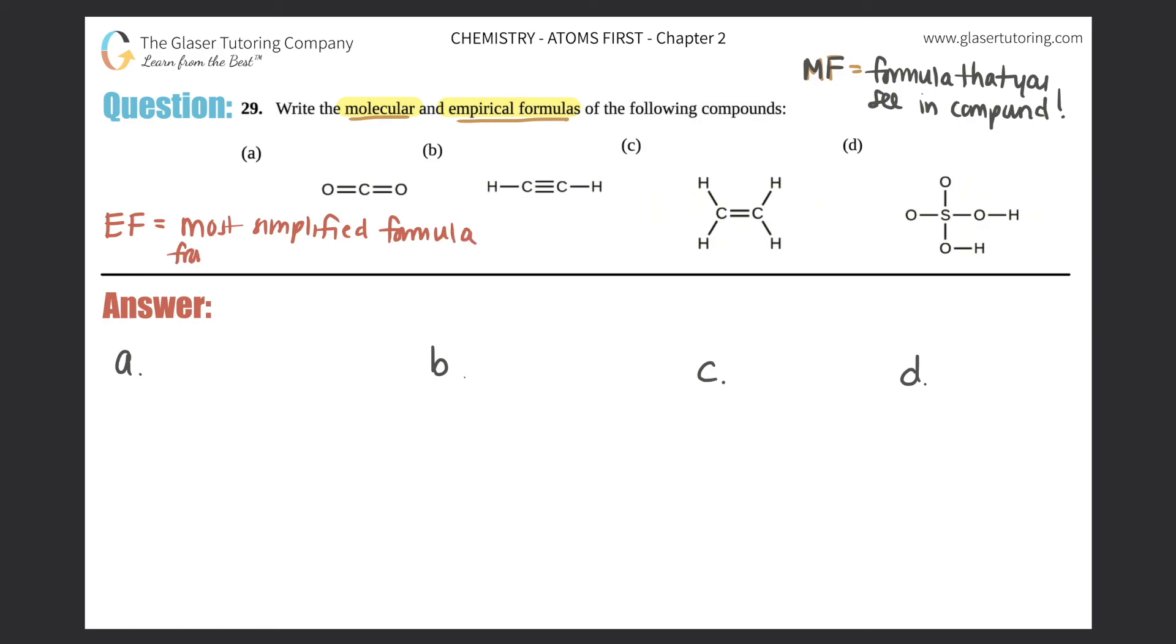However, the empirical formula, which I will put over here as EF, the empirical formula is always the most simplified formula from compound. So this one is when you're going to look at your molecular formula and say to yourself, can I simplify it? And you can only simplify subscripts. So we should know what subscripts are. If I say that I have 2O2, I have two oxygen molecules. The oxygen molecule is O2. The two on the bottom is classified as a subscript. The two in the front is called a coefficient. Get into the habit of knowing the difference between coefficients and subscripts. Subscripts are the little guys at the bottom.